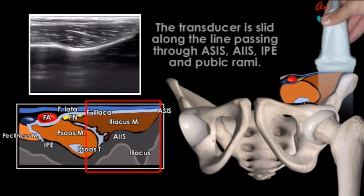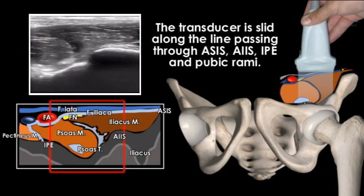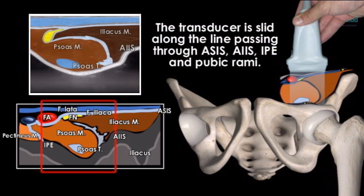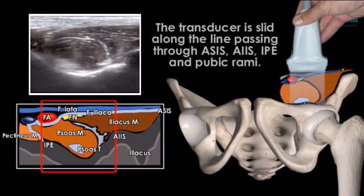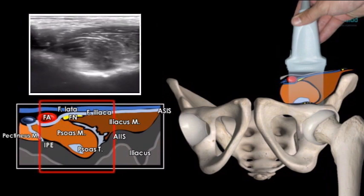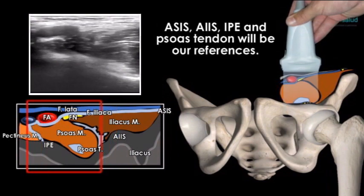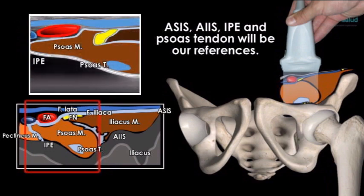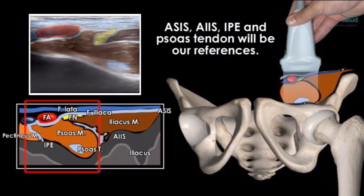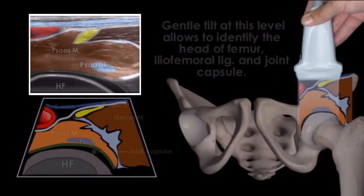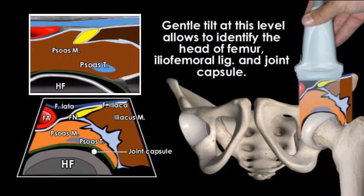By sliding the transducer over the described plane, the AIIS will be identified as a hyperechoic prominence with the iliac muscle over it. The psoas muscle and psoas tendon will be seen lying between the ASIS and the iliopubic eminence. With a distal slide or gentle tilt, we identify the head of the femur and the joint capsule of the hip.